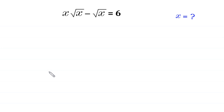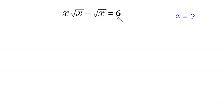Hello, welcome. We need to solve this very nice algebra equation: x times square root of x minus square root of x is equal to 6. We need to find all possible values of x.